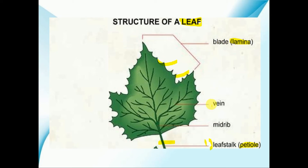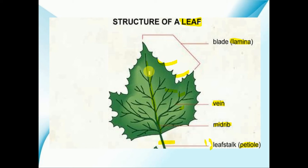After the lamina, we will discuss the third important part, that is your veins. You can see there are so many lines over the structure of the leaf — these lines are known as the veins. After the veins, we will understand about the fourth important part, that is your midrib. In the center of the leaf there is a thick line, and this thick line is known as the midrib. Along with this midrib, you can see the veins are arranged. This is the general structure of the leaf.